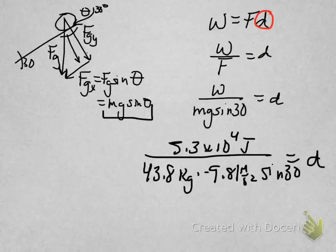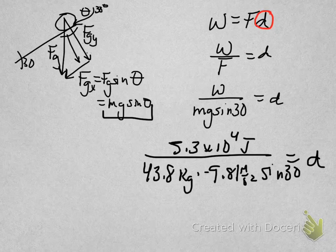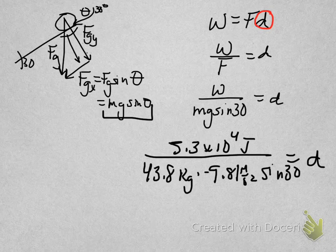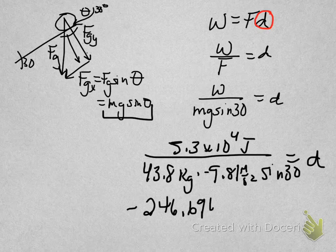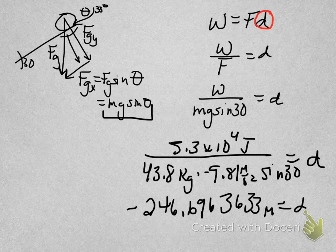So we plug everything in. We could, of course, if we wanted to, we can do dimensional analysis. I think we'll skip it for right now. But remember that joules are kilograms meters squared over seconds squared. We're dividing by kilograms and meters per second squared. So we're getting rid of everything except meters, and lo and behold, that's what we want to end up in. We get a raw answer of negative 246.6963633 meters, and that's equal to distance.